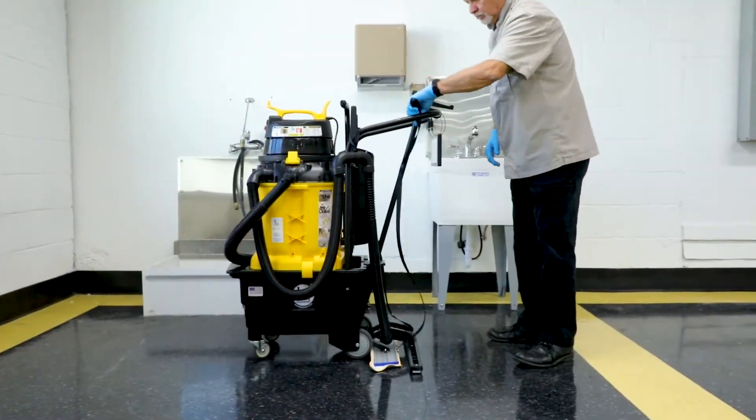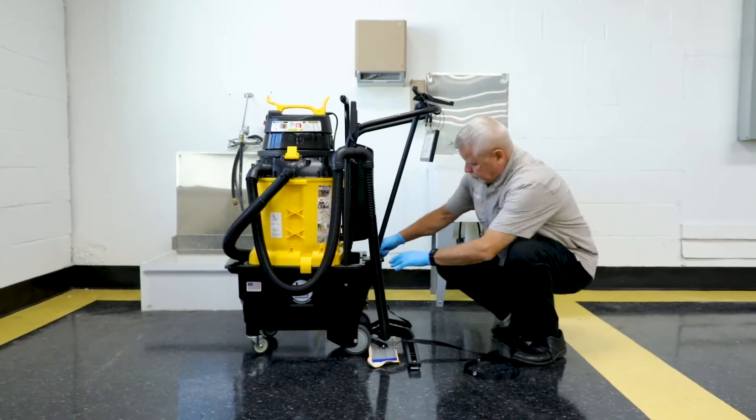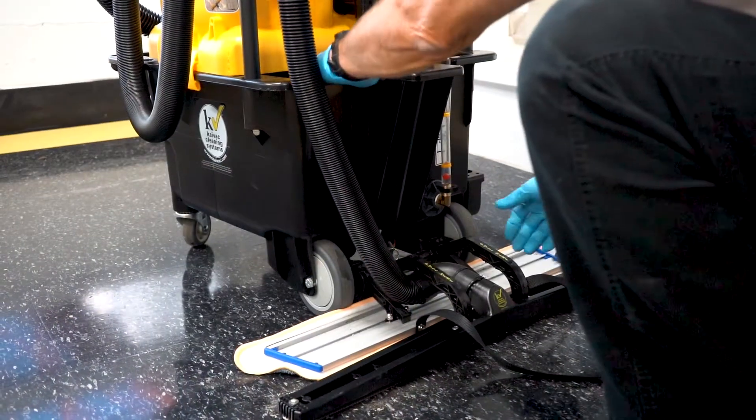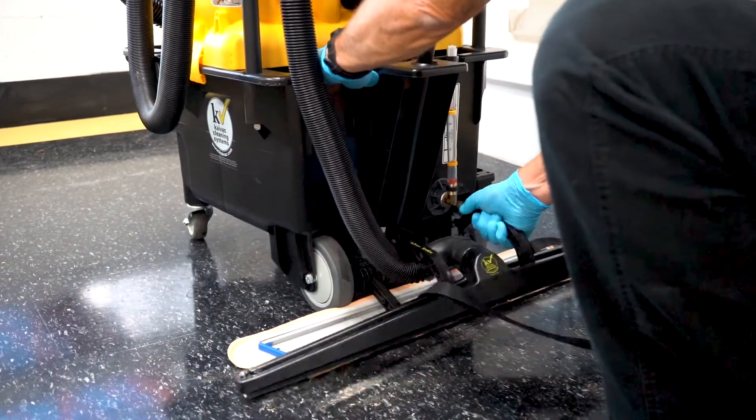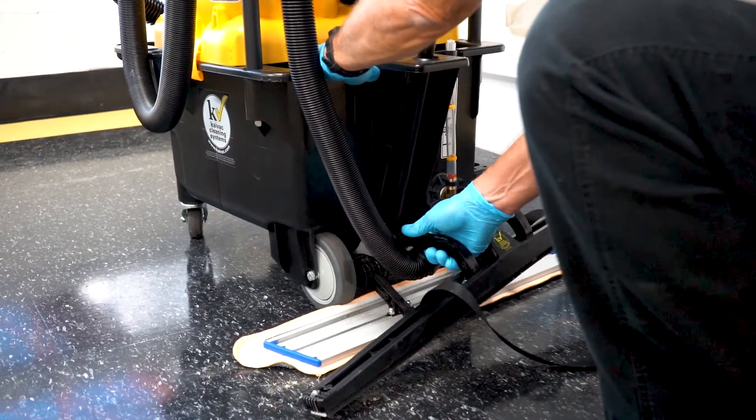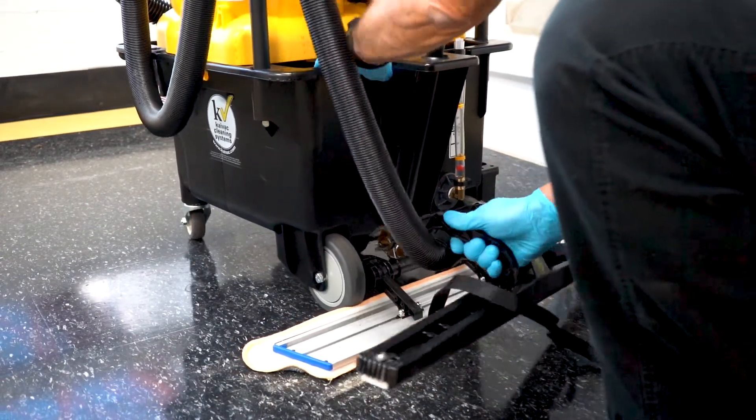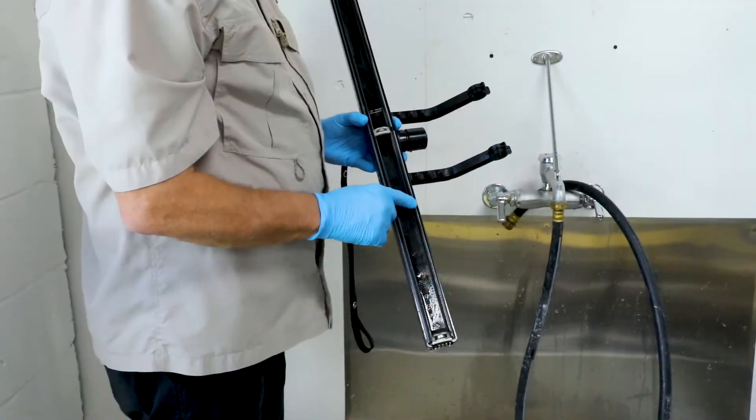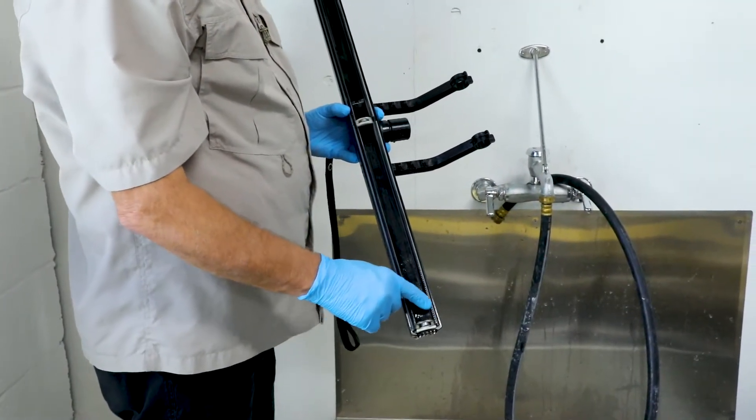Next, remove the squeegee head and spreader pad from the AutoVac hitch. Grab the rear of the trolley bucket for added stability and pull firmly on the squeegee head to release it from the hitch. With the squeegee head removed, take a moment to inspect the squeegee blades for wear.